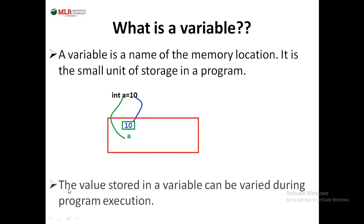The value stored in a variable can be varied during the execution of a program. As the name suggests, it is a variable — meaning it is able to vary. So during the execution of a program, the value which is stored in a variable can be changed.